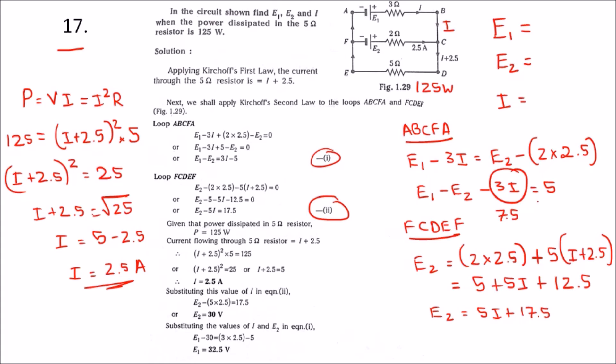When we substitute the i value in equation 2, we will get 12.5, which means E2 will become 30 volts. Once we get E2 as 30...